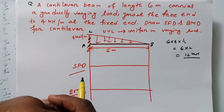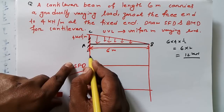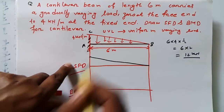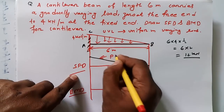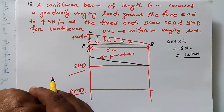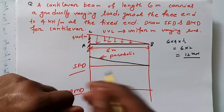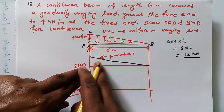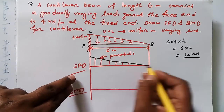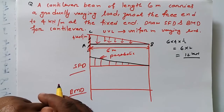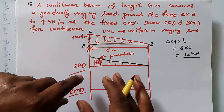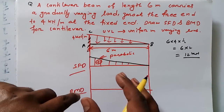Now we draw the shear force diagram. For a uniformly varying load on a cantilever beam, the shear force diagram is parabolic — it curves like this. This is the total shear force diagram. It is positive because it is above the reference line.